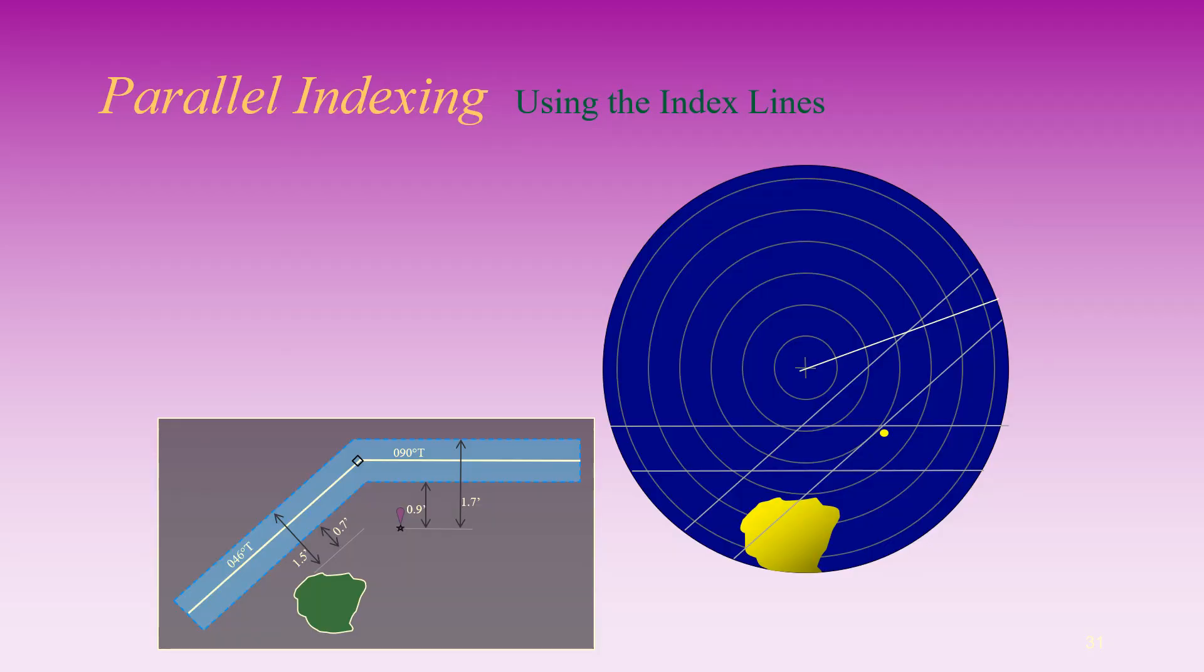The light beacon has just come between the index lines of the second leg, 090 degrees true, indicating that the vessel is now within the traffic lane constituting the second leg. The vessel can turn eastward now.